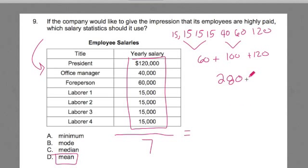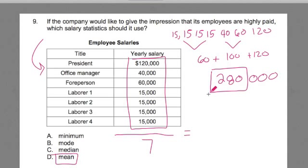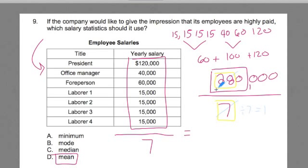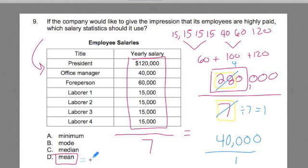The numbers are written in thousands, so there are extra zeros not shown. So I have 280,000 divided by 7. I can think of this as 28 divided by 7 — 7 goes into 28 four times. So the result is 40,000. The average salary, the mean, is 40,000.